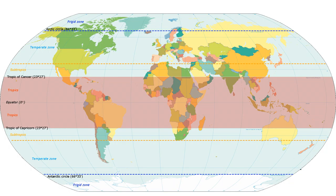The tropics are a region of the Earth surrounding the equator. They are delimited in latitude by the Tropic of Cancer in the Northern Hemisphere at 23 degrees 26 minutes 12.6 seconds, or 23.43684 degrees N, and the Tropic of Capricorn in the Southern Hemisphere at 23 degrees 26 minutes 12.6 seconds, or 23.43684 degrees S. These latitudes correspond to the axial tilt of the Earth. The tropics are also referred to as the Tropical Zone and the Torrid Zone.